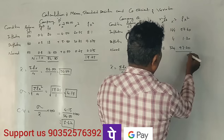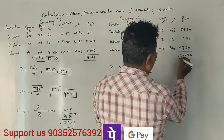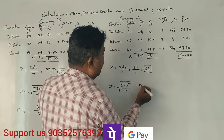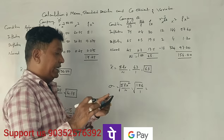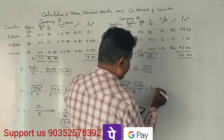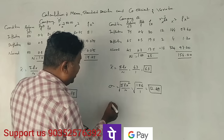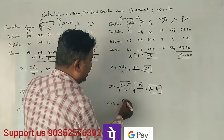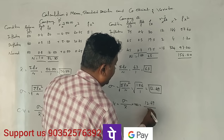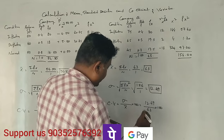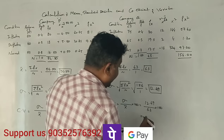The total summation of fx squared equals 156. Standard deviation equals square root of 156 divided by 1, which gives approximately 12.49. The coefficient of variation equals 12.49 divided by 63 into 100, giving 19.82%.